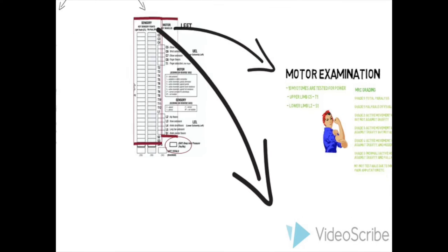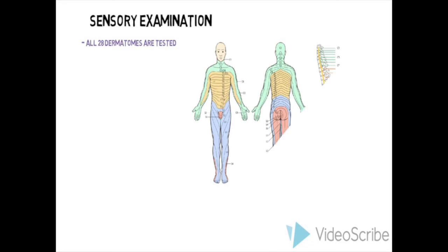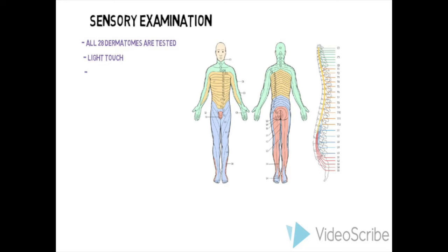The sensory component of the examination is performed in 28 dermatomes, from C2 to S5. For each dermatome, light touch and pinprick sensation are tested and scored. The scoring system uses a 3-point scale: 0 is absence of sensation, 1 is impaired sensation, and 2 is normal sensation.